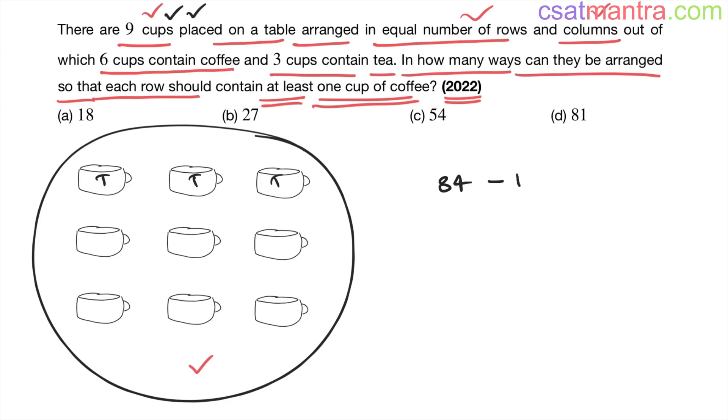Second arrangement - this row has all teas. Third arrangement - this row has all teas. We want rows which has at least one cup of coffee. That's why we are subtracting rows with no cup of coffee from the total number.